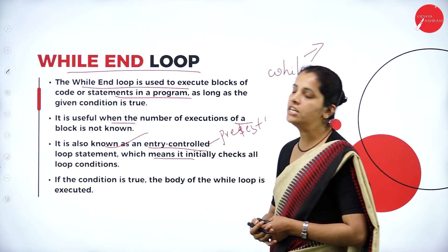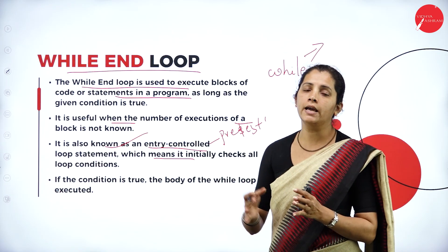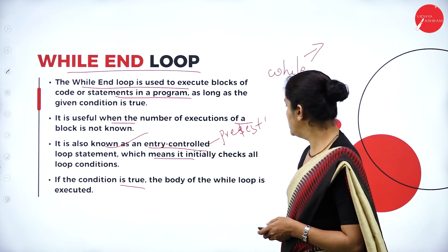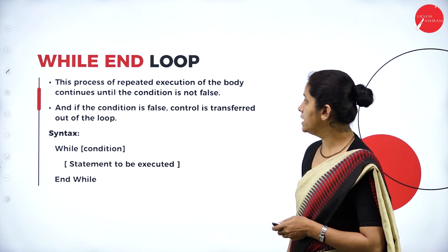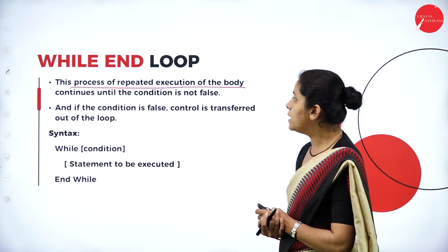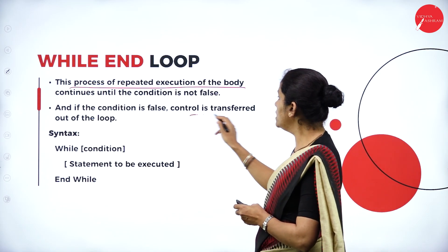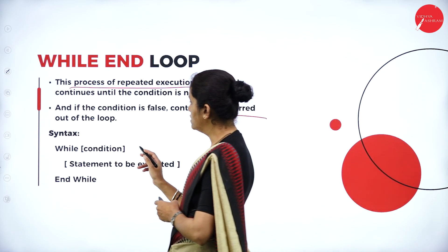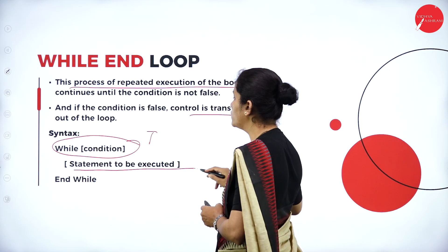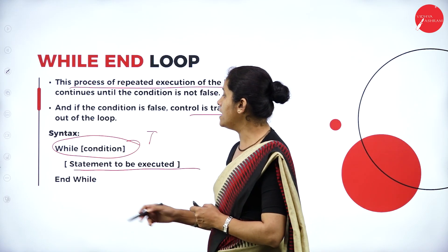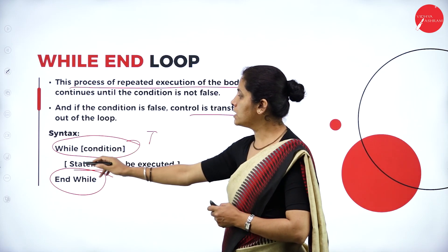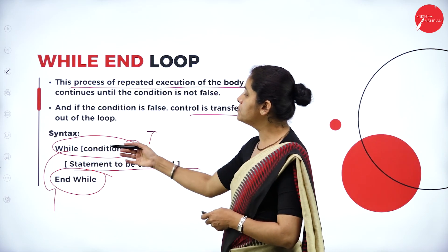The while end loop initially checks the condition. If the condition is true, you can enter the while block and the body is executed. This process is repeated until the condition is true. Once the condition is false, the control is transferred out of the loop. The general syntax is: while condition, followed by the set of statements to be executed, then end while. If the condition is false, the control comes out of the while loop.